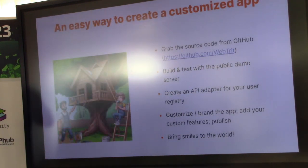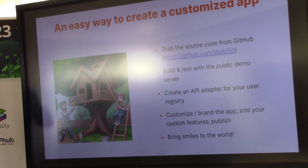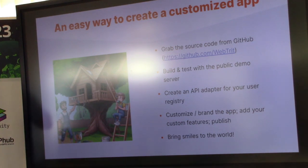Coming back to my treehouse example: WebTrade is like getting a fully assembled, fully installed treehouse from day one. The only thing you need to do is paint it if you want a different color, or change a few small things. To start using WebTrade: download the source code, test it with our demo server, create an API adapter to connect to your storage of user data if needed, do customization, maybe add some screens or functionality, or just do visual branding with colors and fonts. We offer a visual editor. And you make yourself and your customers happy.